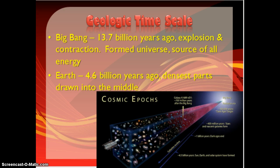So let's start off at the beginning, or where all of this energy and where Earth really is coming from. The current ideas about this go back to the Big Bang Theory, which says that about 13.7 billion years ago there was this giant explosion, and then that was followed by a contraction where everything started to come back together, and that's what formed the universe, the stars, the planets. That was really the source of all the energy that we're still using today. The Earth was formed about 4.6 billion years ago, still a part of that whole Big Bang phenomenon, and that's when the densest areas of those molecules that were gravitating around the sun started to be drawn into the middle of what is now the Earth.